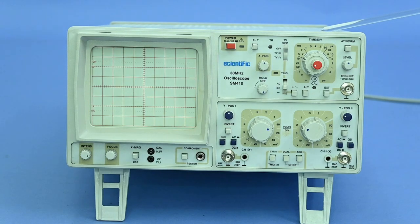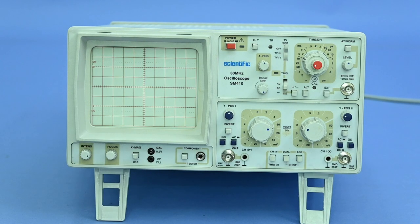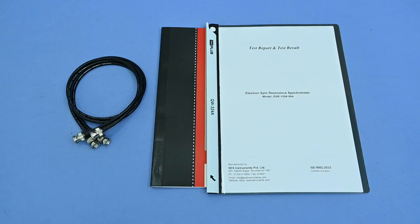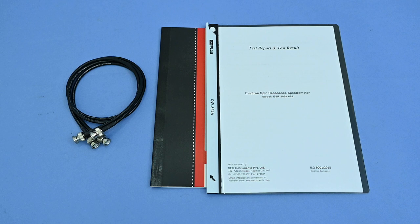CRO is an essential accessory not supplied with the unit but required to see the resonance. Any normal CRO with XY mode will be sufficient for this experiment. Also included are 2 CRO leads, test results report, and user manual.